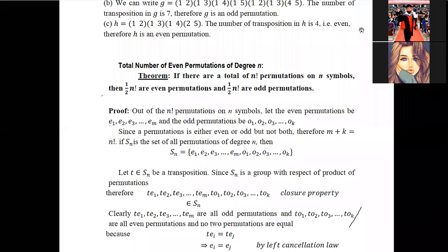In any symmetric group Sn with n factorial elements, half are even permutations and half are odd permutations. For example, S3 has six elements: three even permutations and three odd. S4 has 4 factorial equals 24 elements: 12 even and 12 odd. So in any Sn, exactly half are even permutations and half are odd permutations.